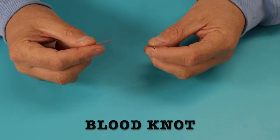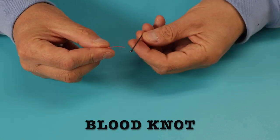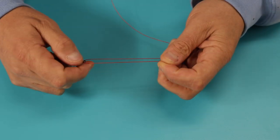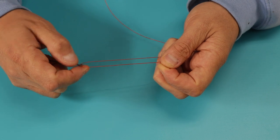For the blood knot with clench, you take your tag end and pass it through the eye of the hook and give yourself about three inches to work with.